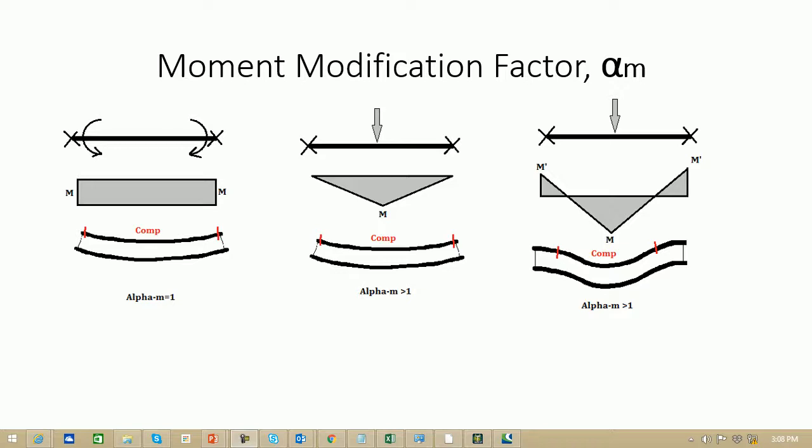In the second case, the loading and restraint arrangement produces a triangular bending moment profile, where the bending moment is at its peak at the center and starts diminishing as it approaches the ends. At the compression flange, the compressive stress is maximum at the center. Now, the compression flange width doesn't vary — it remains constant along the entire length — but the compressive stress developed in the compression flange decreases as it recedes from the center.